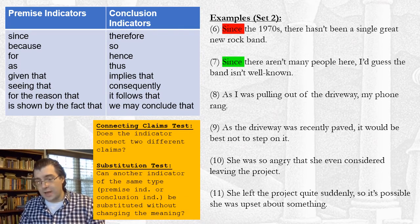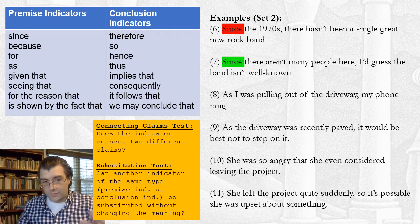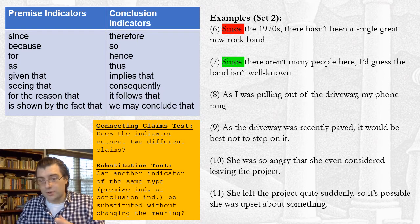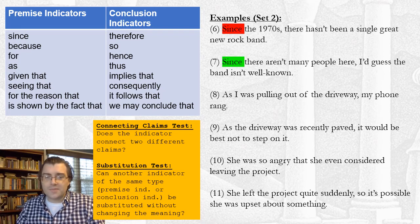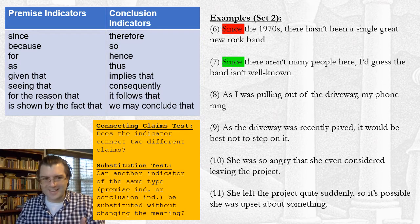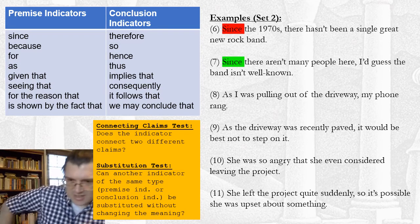You might be wondering how to tell whether one of these words is being used as a premise indicator or a conclusion indicator. There are two tests you can do. They're not perfect, but they are useful indicators of whether the words are serving as premise or conclusion indicators.